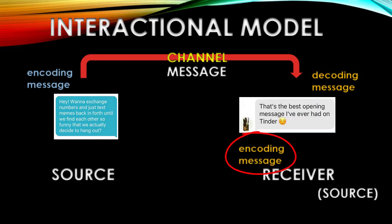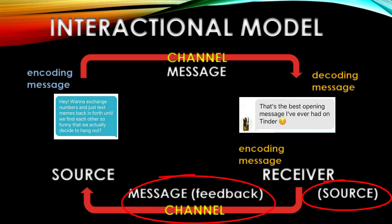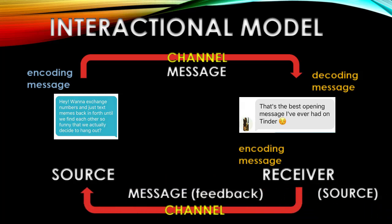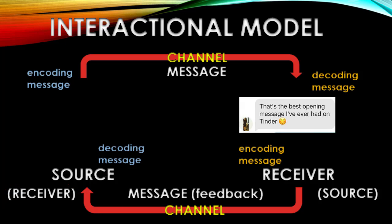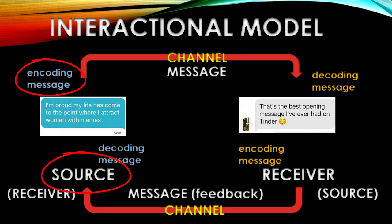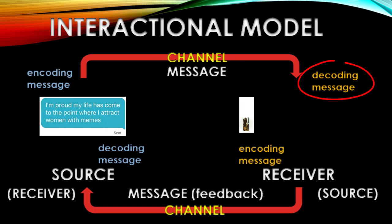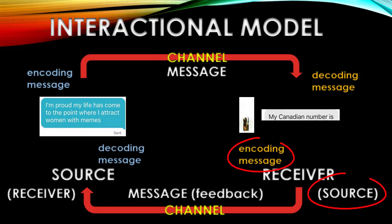She encodes that response — "That's the best opening message I've ever had on Tinder" — and so now Megan as receiver becomes Megan the source, and sends this text message through the SMS channel back to our hero, who now becomes a receiver of this message, decoding Megan's response and figuring out what it means, and then responding back: "I'm proud my life has come to the point where I attract women with memes." This message is encoded, sent through the channel to Megan, who decodes it and ultimately encodes a response: "Here's my phone number."